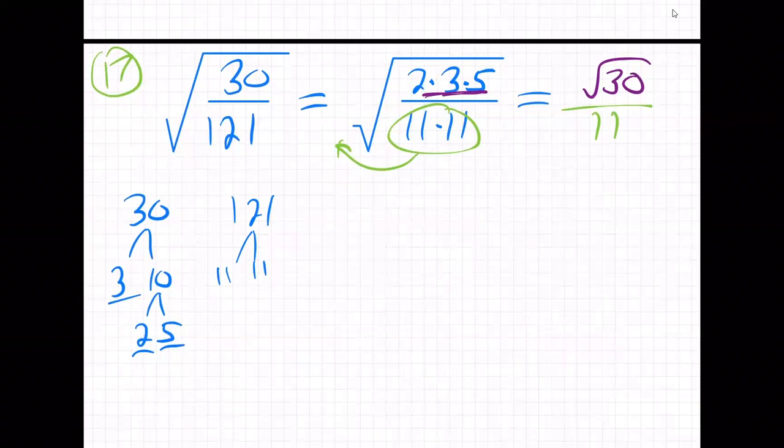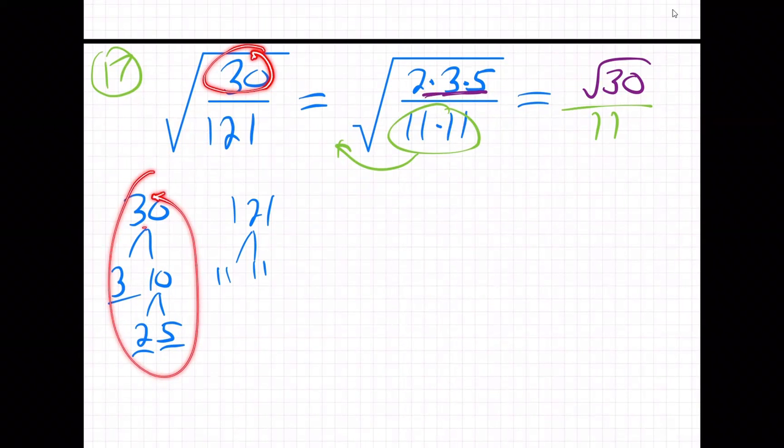So you can't do the square root on the top. You just multiply 2 times 3 times 5, which is 30, and leave it in the square root. Long story short, you can't square root 30. When you break it down, there's not two of anything, so it just stays square root of 30.